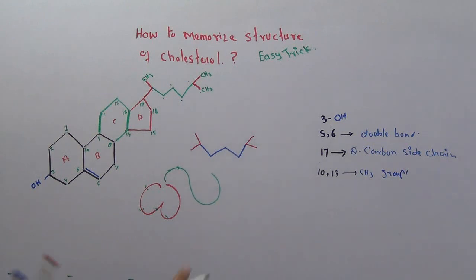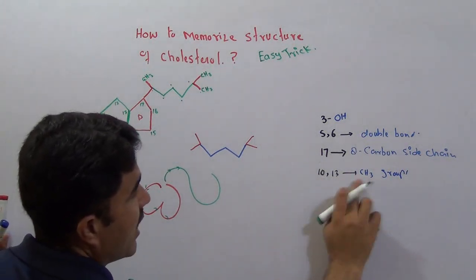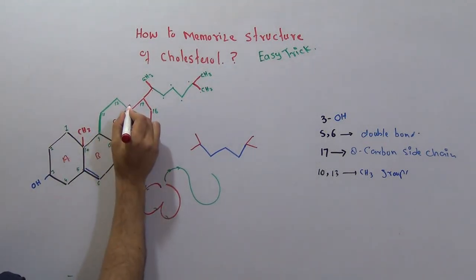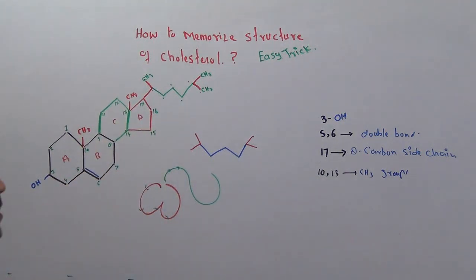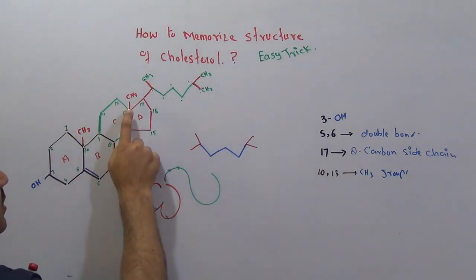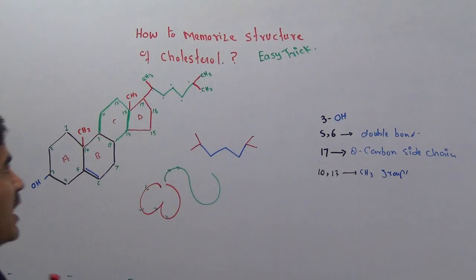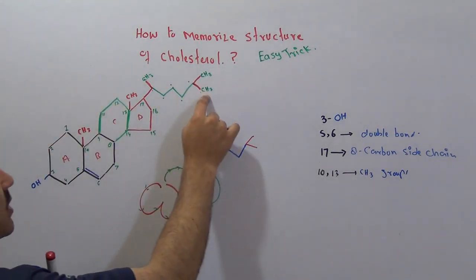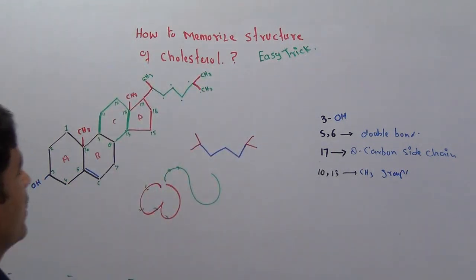And at carbon ten and thirteen there is methyl group CH3. At carbon number ten you will add CH3 group here, and you will add another CH3 group here. So carbon number ten is very special because it contains methyl group as well, along with these three bonds. And carbon number thirteen, along with three bonds, also contains methyl group. So overall we got five methyl groups.